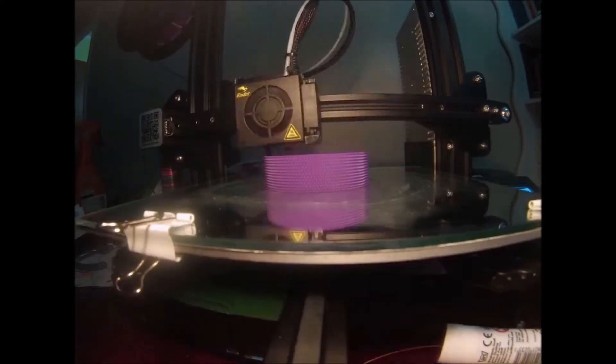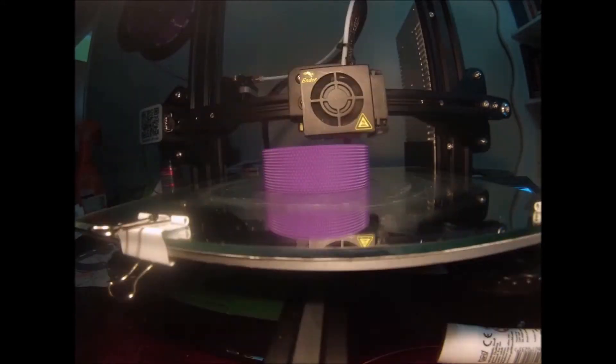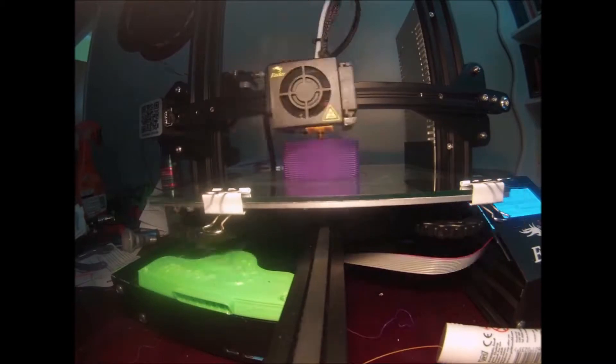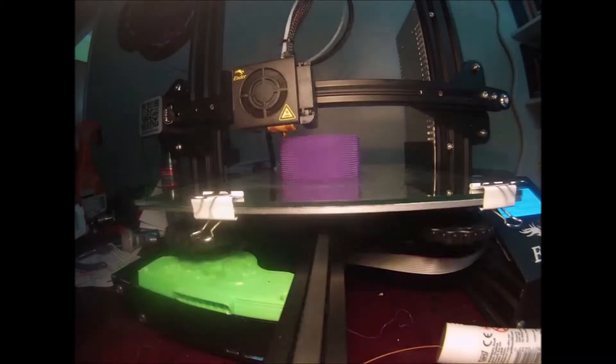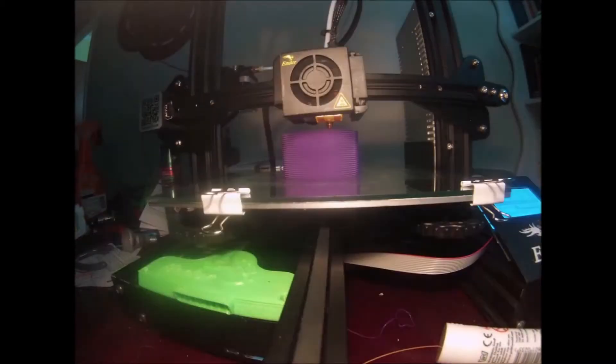Don't forget, you've got a heated bed on this Ender 3, which is a big advantage for different filament types to help it stick to the bed. But Pritt stick will be your friend on a glass bed if it doesn't stick. I don't know why mine doesn't stick on a glass bed, but it doesn't, so Pritt stick comes to the rescue.